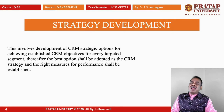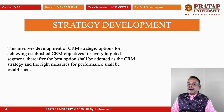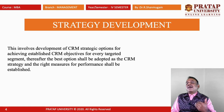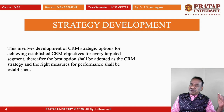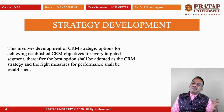Strategy development is the first step. This involves development of CRM strategic options for achieving established CRM objectives for every targeted segment. The best option shall be adopted as the CRM strategy, and the right measures for performance shall be established. For example, Apple targets high-tech savvy people, high-income groups, or a standard class of people. Due to the brand's reputation and brand image, people are ready to purchase.